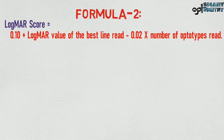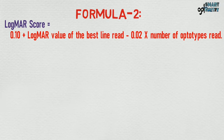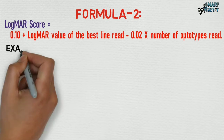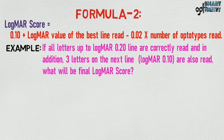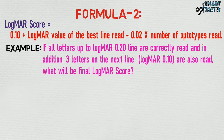Formula 2: logMAR score equals 0.10 plus the logMAR value of the best line read, minus 0.02 multiplied by the number of optotypes read. For example, if all letters up to the logMAR 0.20 line are correctly read, and in addition 3 letters on the next line — that is, logMAR 0.10 — are also read, what will be the final logMAR score?